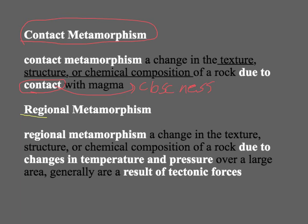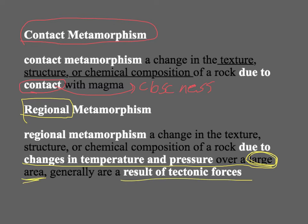Regional metamorphism takes place over a large area. It's due to changes in temperature and pressure across a large region, and is generally the result of a major tectonic force — seafloor spreading, plate movement, or subduction. So it's driven by some kind of large-scale plate tectonic activity.